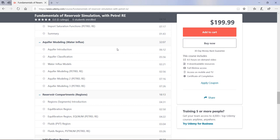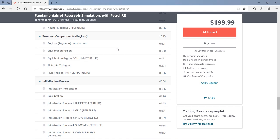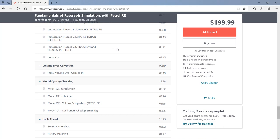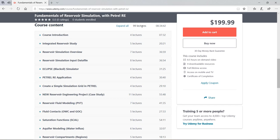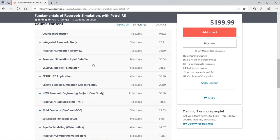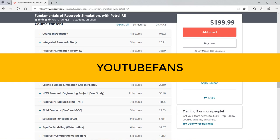So if you are one of those hundred persons who have gone earlier to check the course out, it's now ready for you. So you can go on to search for Fundamentals of Reservoir Simulation with Petrel RE and you're going to find it in the search results. Or you can simply make use of the link which I have provided in the description down below. And in addition to that, you can make use of this coupon code YouTubeFans to get up to 50% discount on the course.